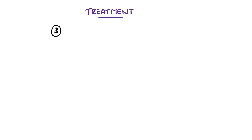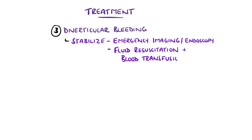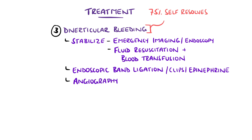Initial management of diverticular bleeding will be similar to other bleeds, that is ensuring haemodynamic stability, for example using the shock index. Treatment may mean emergency imaging and endoscopy, intravenous fluid resuscitation, and blood transfusion. 75% of diverticular bleeding will spontaneously resolve, therefore supportive care may be adequate, like stopping anticoagulants and encouraging oral intake, while others may need endoscopy with band ligation, clips, or adrenaline injection to stop the bleeding. If angiography is done, it can also offer therapeutic options in the form of embolisation. Surgical resection of the part of the bowel affected may be indicated if there are repeat refractory bleeds.